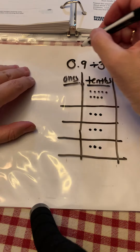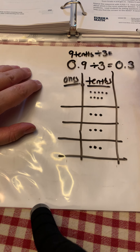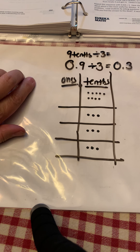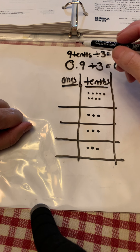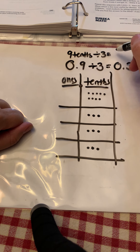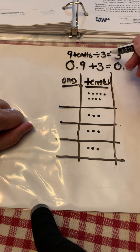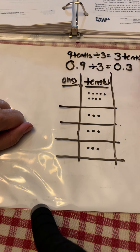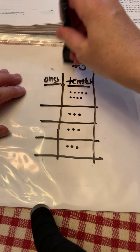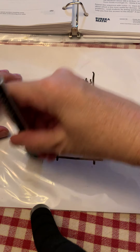Now, if I wrote this in unit form — 9 tenths divided by 3 — would that help you solve this problem? Think about how we've been looking at multiplication. If I said 9 apples divided into 3 groups, everybody would know that that's 3 apples. So if I say 9 tenths divided by 3, I would know my answer is 3 tenths. Knowing unit form for these problems can be really helpful when we're doing basic division facts.